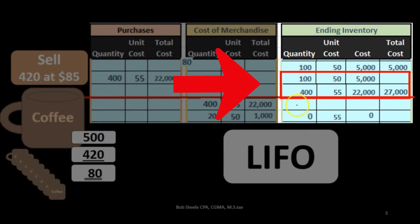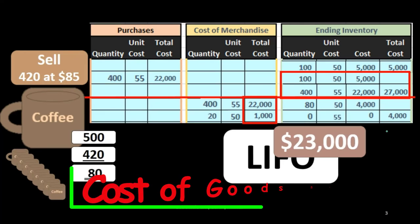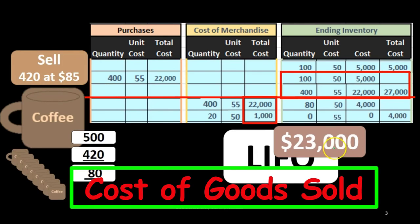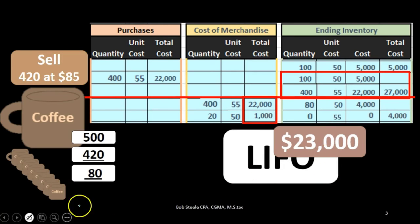That leaves us with zero of the 400 units at $55 — those are gone — and 80 remaining units from the original 100 at $50, giving us $4,000 in ending inventory. The cost of goods sold for this sale is $23,000 under the last in first out method.